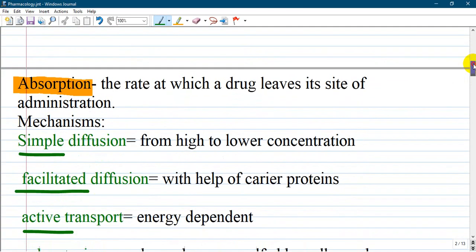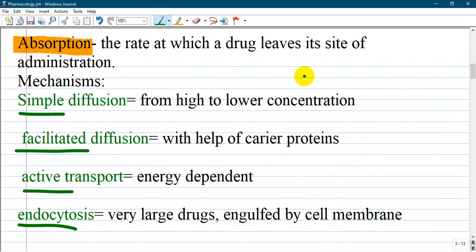Let's start with absorption. It's the rate at which a drug leaves its site of administration, which you can also associate with route of administration. Many mechanisms of absorption - we can count simple diffusion from higher to lower concentration, a concentration gradient. Facilitated diffusion is the same thing from higher to lower concentration but uses proteins to help passing.